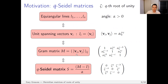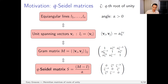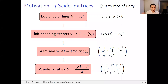So how do we get from equiangular lines to Hermitian matrices? You start off with your equiangular lines. To avoid trivialities, we assume our angle is positive. We take unit spanning vectors, and we're in the case where the inner product is just alpha multiplied by some roots of unity. We take the gram matrix — ones on the diagonal since the spanning vectors are unit vectors, and on the off-diagonal, alpha multiplied by some roots of unity. Then we subtract off the diagonal and divide by alpha, giving us a Hermitian matrix all of whose off-diagonal entries are roots of unity. This is a reversible process.